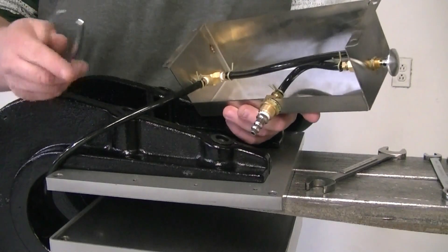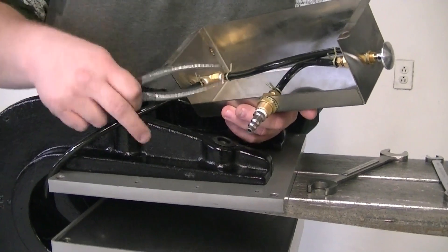Once you have all four of those removed, remove the control box from the hose.